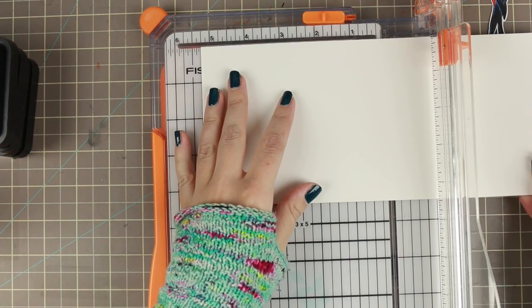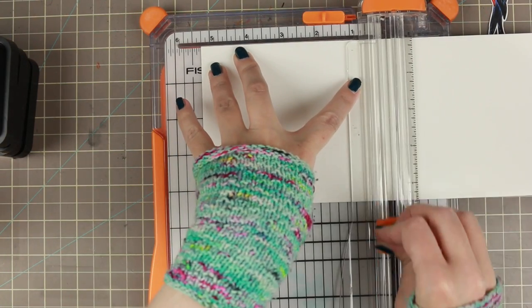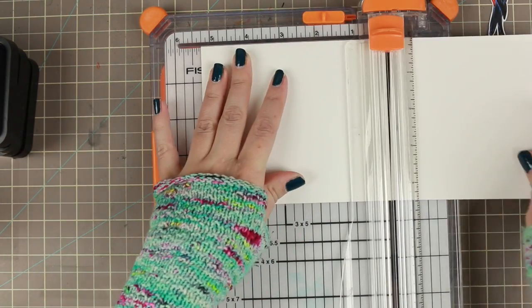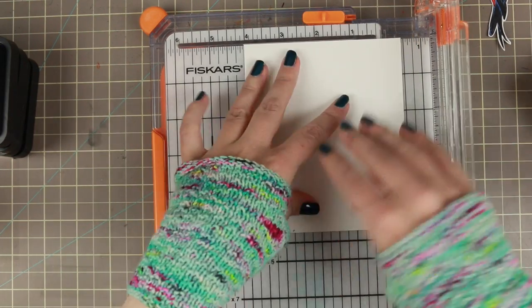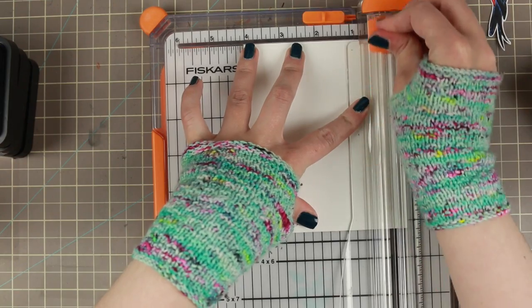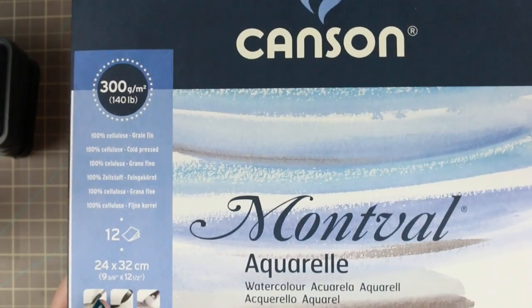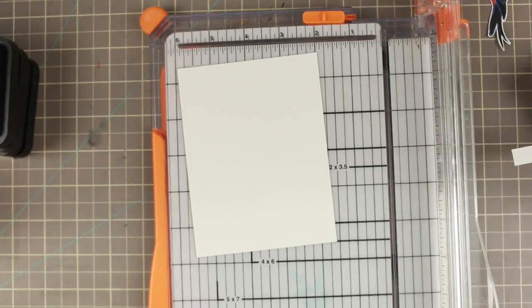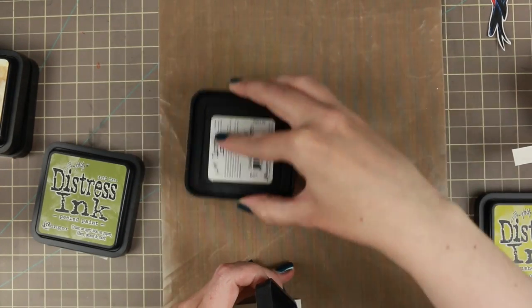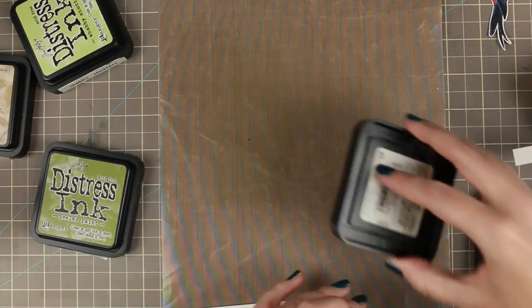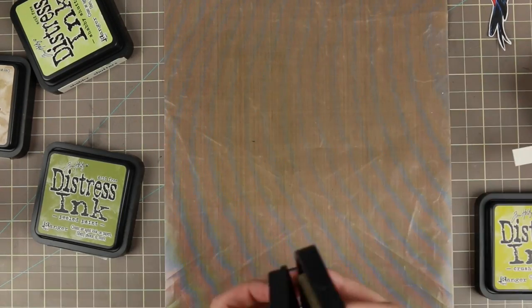Cutting out some watercolor cardstock. This is the Monteval cardstock. I'm cutting it down to five and a quarter by four because I want to have a card base that has a little bit of a border around. It's the Canson Monteval 300 GSM cardstock, so it's pretty thick and therefore it can take a lot of water, which means I can layer a lot of colors.